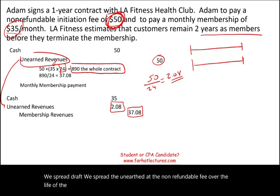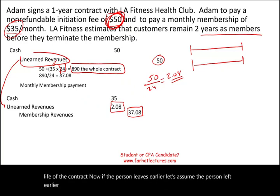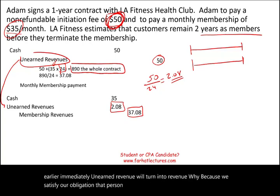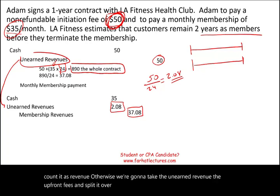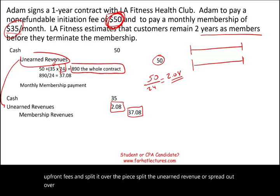If the person leaves earlier than expected, the remaining unearned revenue immediately turns into revenue. Why? Because we have satisfied our obligation — the person left and since the fee is non-refundable, we can now count it as revenue. Otherwise, we continue to take the upfront unearned revenue and spread it out over the period that we provide service.